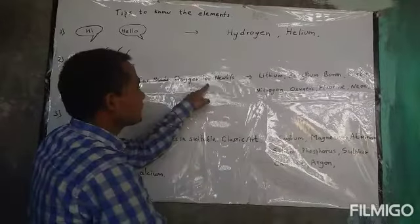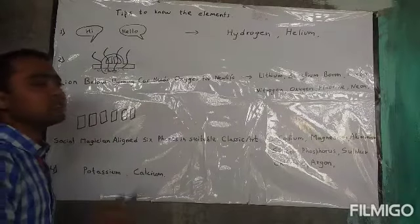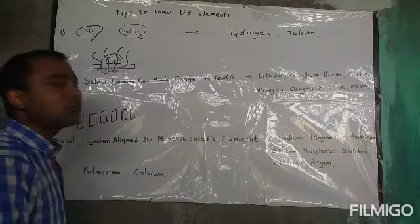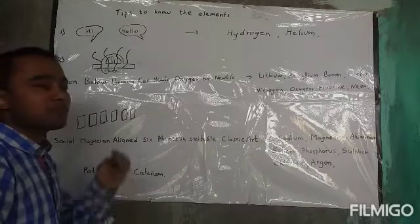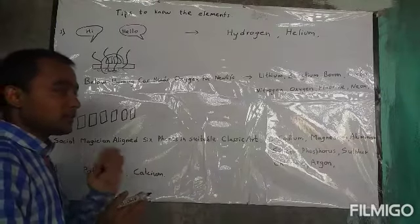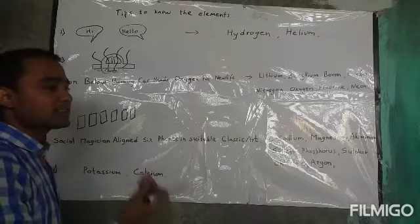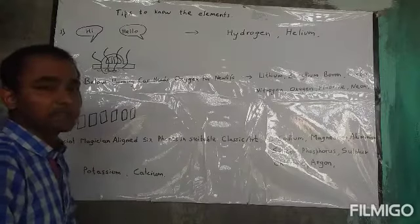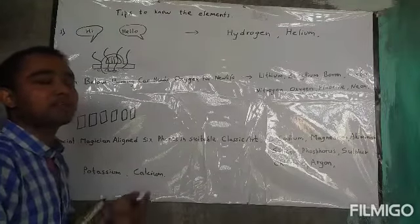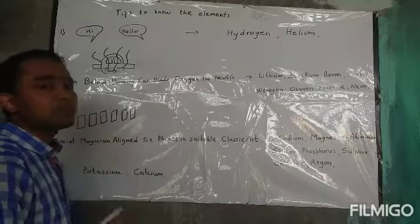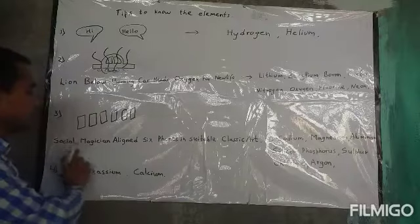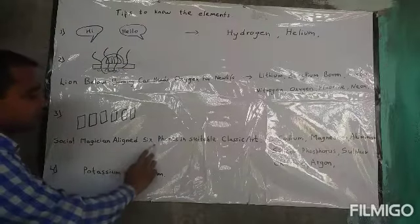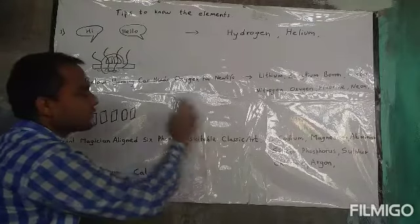As you went further, you saw a magician man coming toward you, displaying some mobile phones in an art form to take your attention and impress you into buying one. He kept the phones in a suit as a display. To remember these elements: the magician (sodium/Na) aligned (aluminum) six (silicon) phones (phosphorus) in (sulfur) suitable (chlorine) classic (argon) art (potassium/K).